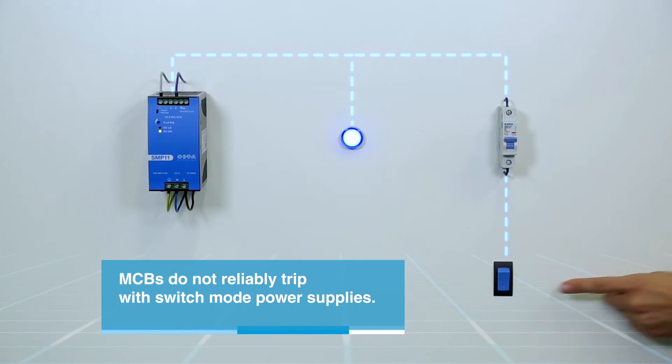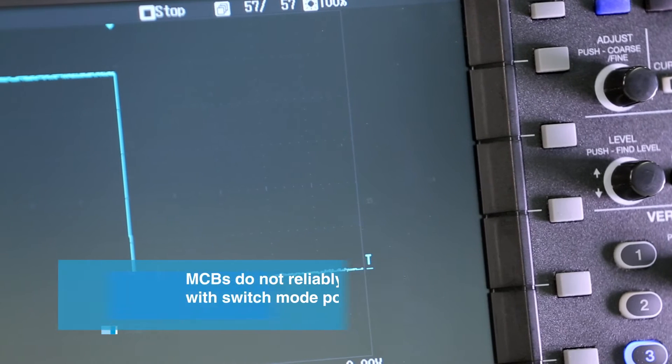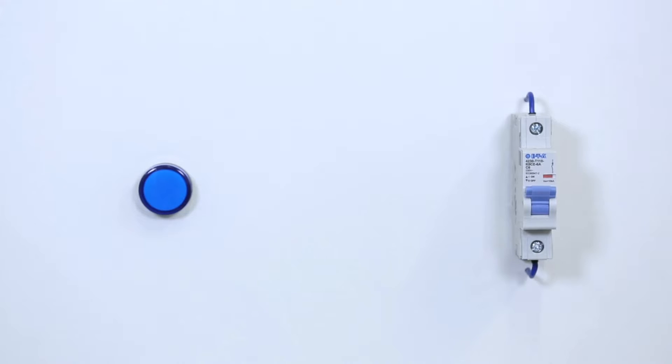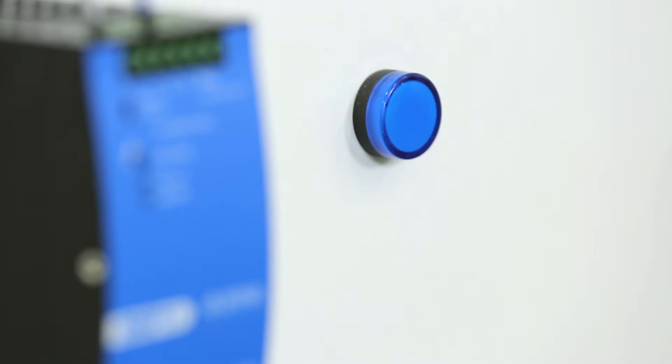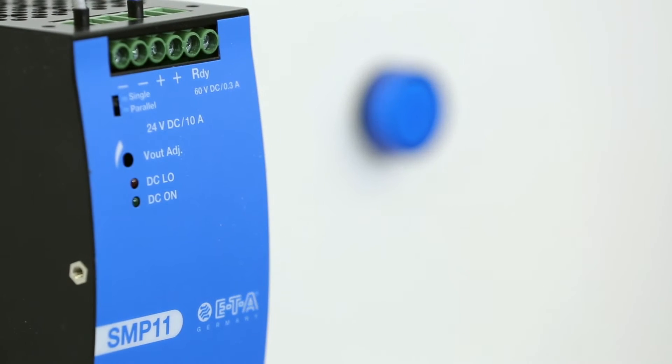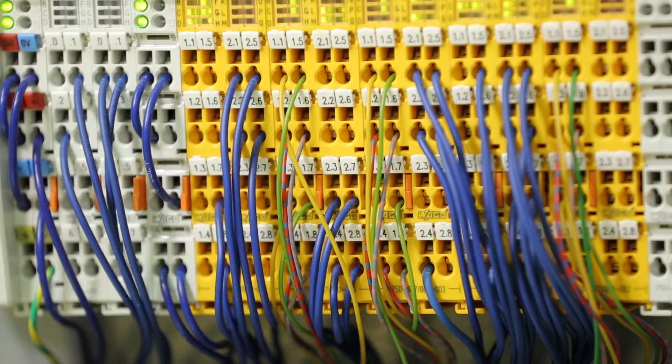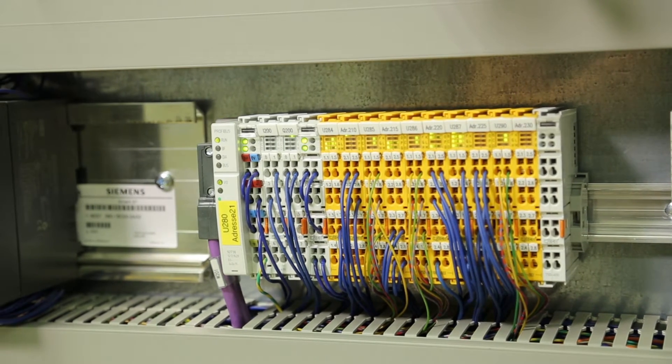Why are MCBs not able to trip reliably? MCBs with C characteristics only trip with at least 15 times rated current. Such a high current cannot be provided by a switch mode power supply. Long cables and the resulting resistance values also limit the short circuit current.